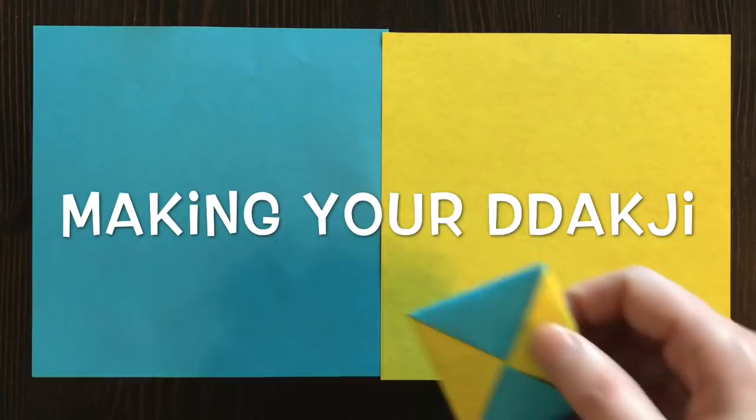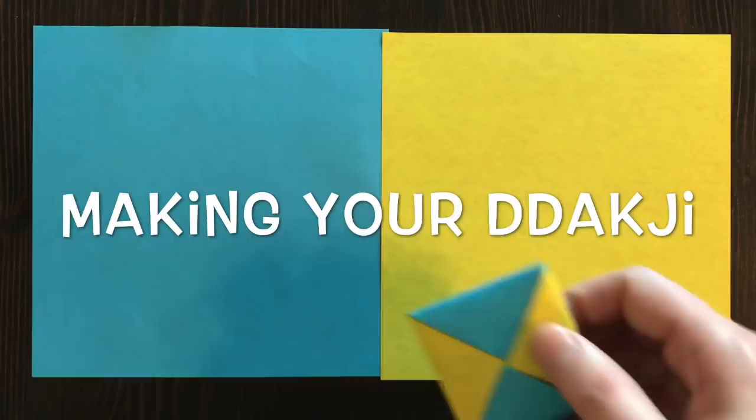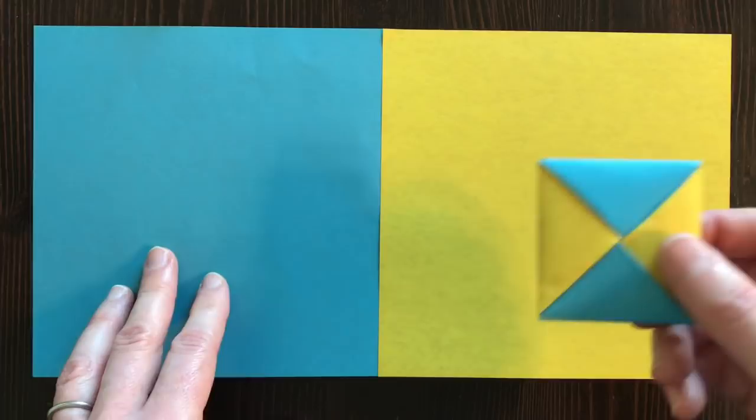Now for this project, you're going to need two sheets of square paper. You can use origami paper. I'm using 6 inch by 6 inch origami paper.